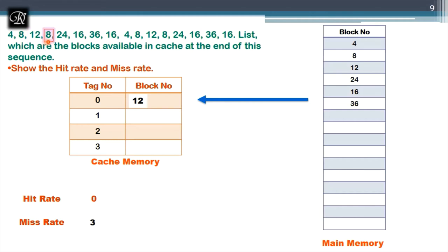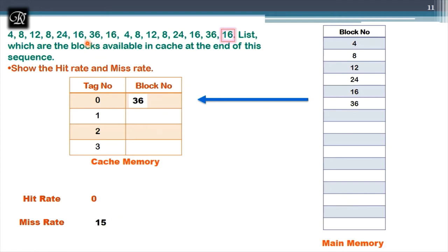Next request is block 8: 8 mod 4 = 0, goes to line 0 again — miss, count = 4. Block 24: 24 mod 4 = 0, line 0 again — miss. Block 16: 16 mod 4 = 0. Block 36: 36 mod 4 = 0. Every single block in this sequence maps to line 0.